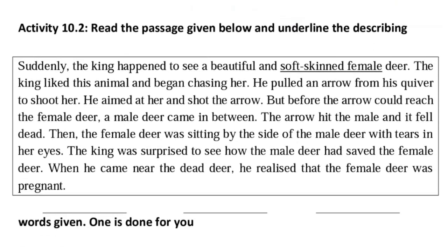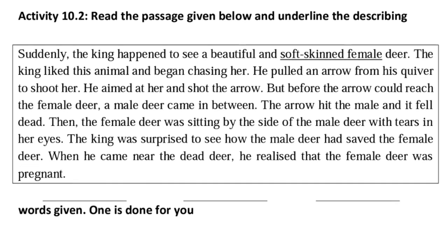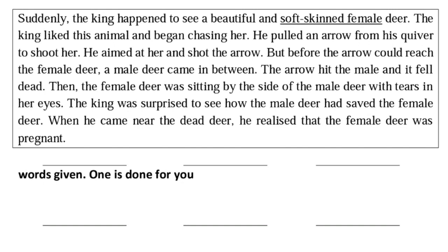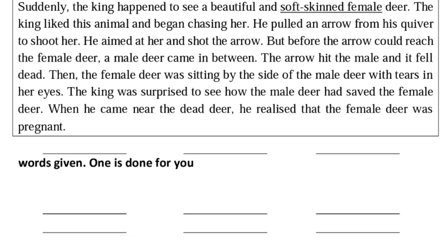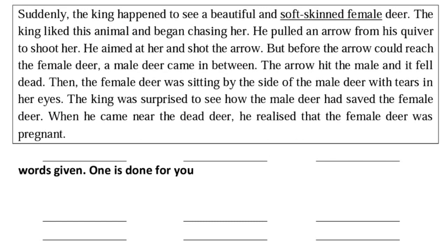The next activity given is: read the passage given below and underline the describing words. You have to read this passage and underline the describing words by your own. For example, 'the king happened to see a beautiful and soft-skinned female deer.' There are some more describing words in this passage — you have to underline them.